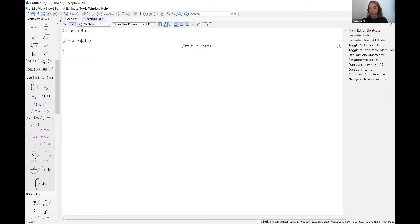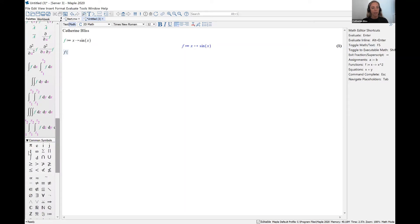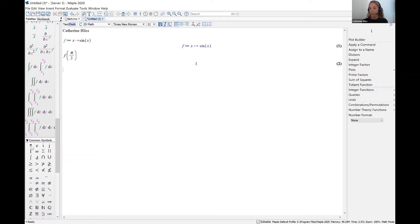Let's make sure that Maple understood what we are asking. Let's compute f of pi over 2. Pi is found down in the common symbols palette, and Maple gives me the answer 1.